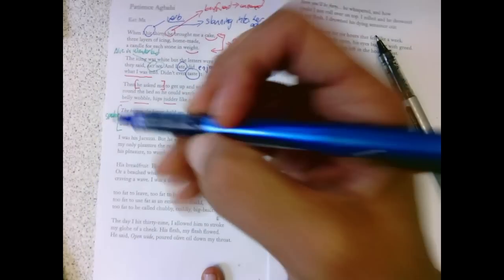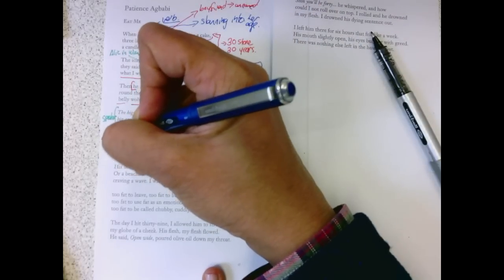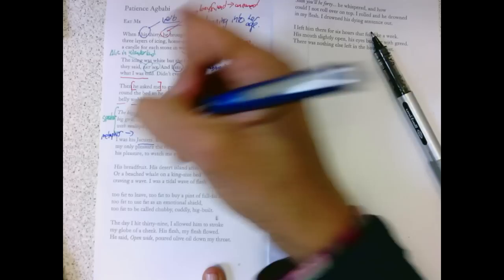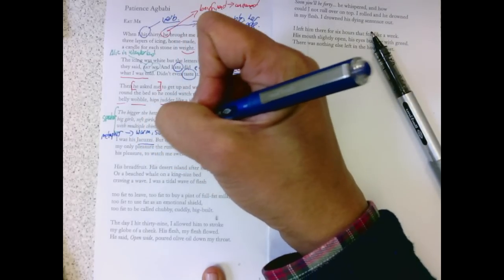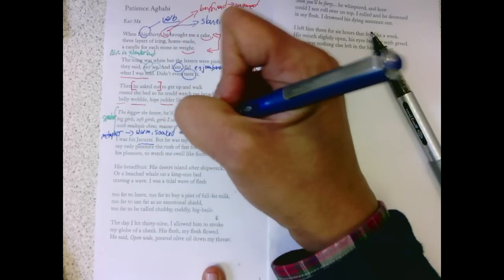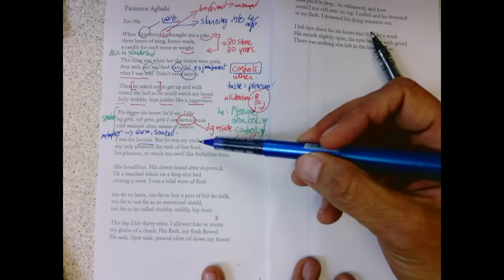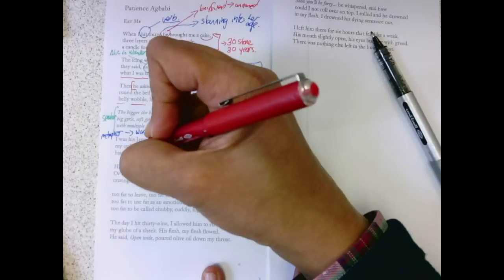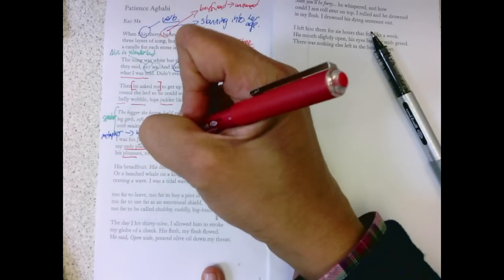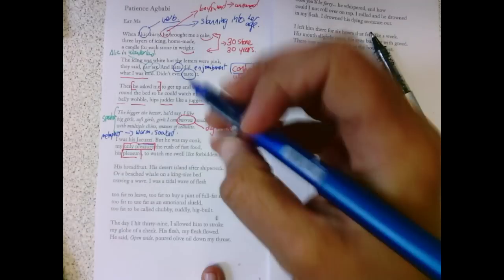I was his jacuzzi. Metaphor. I was the place which was warm, that he soaked in. He was my cook. My only pleasure, the rush of fast food, his pleasure, to watch me swell like forbidden fruit. So again, this only pleasure and his pleasure, you get that contrast.